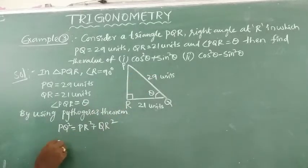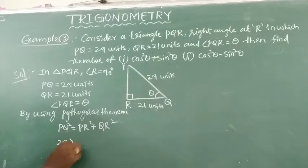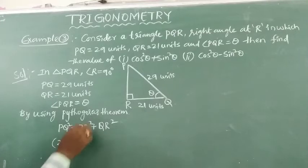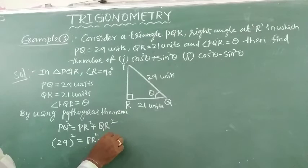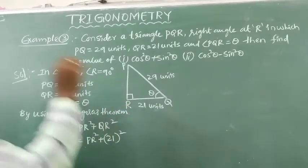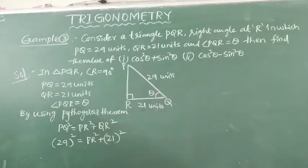Q value is 29 units. So, 29 square equals to PR square plus QR square — value is 21 square. So now we have to find just the PR square value.